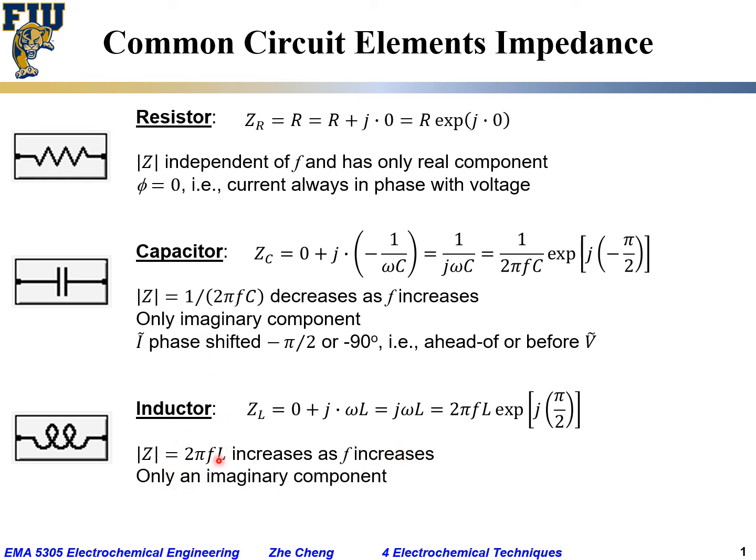Similarly to capacitor, the impedance for an inductor only has imaginary component. And the current would be shifted positive 90 degrees, or half pi positive, with respect to the voltage, which means the current would be after or behind the voltage. The response would be 90 degrees later or 90 degrees after the voltage in terms of the phase shift.